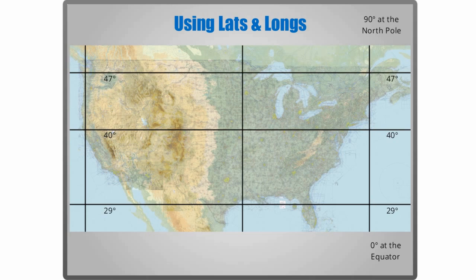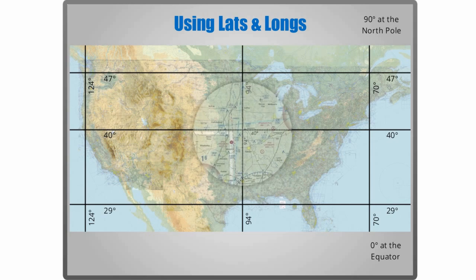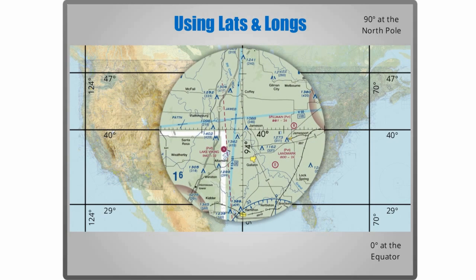Just outside of the east coast, we see the 70 degree line of longitude, properly referred to as 70 degrees west because it's in the Western Hemisphere. Vertically over the center of the country is the line signifying 94 degrees of longitude, and the one along the west coast lies at 124 degrees. As an example, where 40 degrees of latitude and 94 degrees of longitude cross, we zero in on a specific point in the state of Missouri.